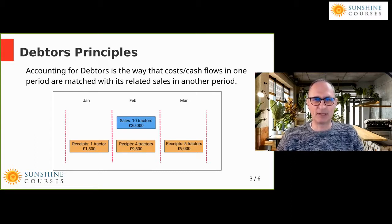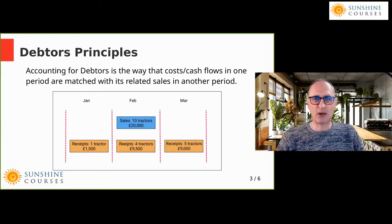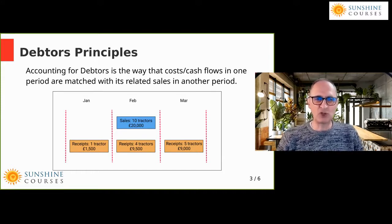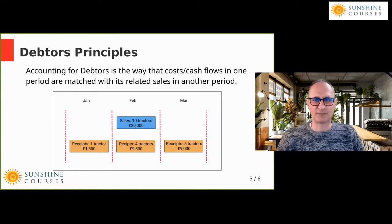The sales happen in February — defined by the date goods are delivered. We receive some cash in January, some in February, and some in March. One customer needed a tractor urgently and paid in advance in January so we could buy the stock; then in February we deliver it. By end of February, we've had payment for five tractors, leaving a debtor for the remaining five — an asset because we expect that money in the future.